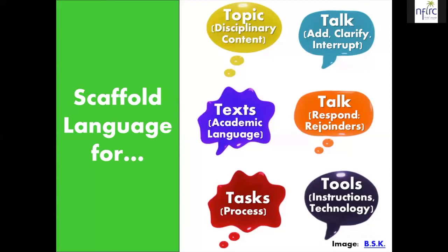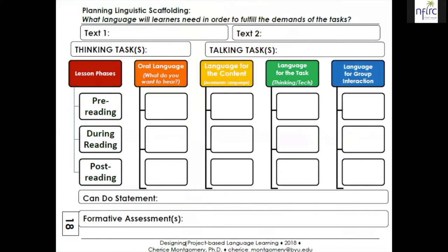We need to make sure we're providing enough tools and scaffolding so learners can use the technology or understand the instructions. There's a planning sheet in your packet to help you think through: for my pre-reading activity, if these are my two texts and this is the thinking task — comparing and contrasting, categorizing, or sorting — and these are the talking tasks, then what oral language do I want to hear coming out of their mouths? What language do I want them to use to talk about the content? What language do they need for the task? What language do they need for group interaction?